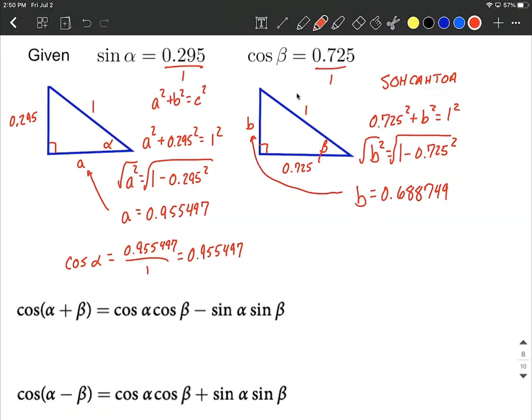So we know cosine of beta. Let's find sine of beta. So sine of beta would be given by, based on SOHCAHTOA, sine is going to be opposite over hypotenuse. So B, 0.688749 over the hypotenuse, which is 1, which is, again, because it's over 1, just going to simplify down to be that numerator.